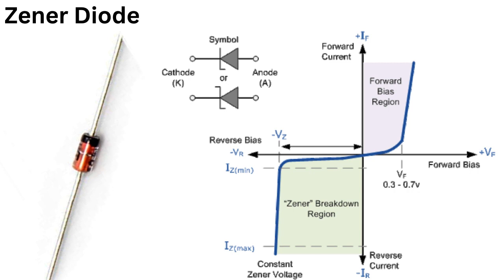When a Zener diode is connected in forward bias, it behaves like a regular diode and allows current to flow through it. However, it is not designed to operate in this region and therefore might not have the same performance as a regular diode.